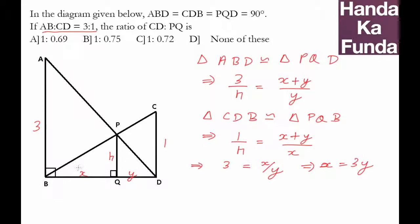So instead of x I can write 3y here. Now what am I asked? I am asked for the ratio of CD by PQ. CD by PQ was essentially 1 upon h. CD was 1, PQ was h.